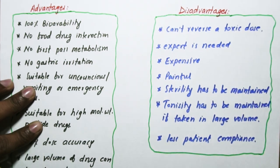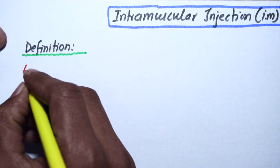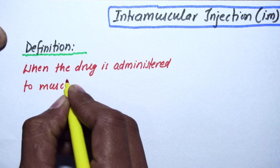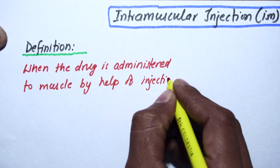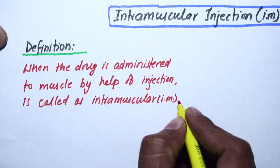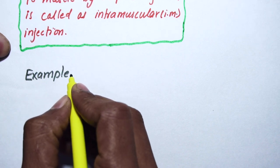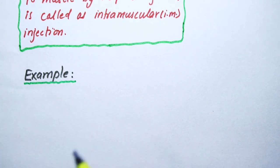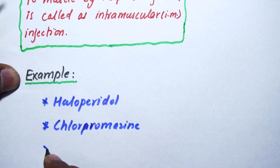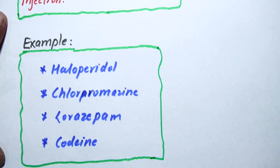Now we will discuss intramuscular route. First, the definition: when a drug is administered to muscle by help of injection, it is called intramuscular or IM injection. Examples of intramuscular route include haloperidol, chlorpromazine, lorazepam, and codeine.